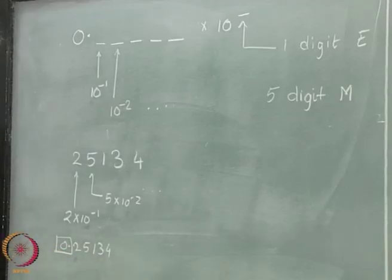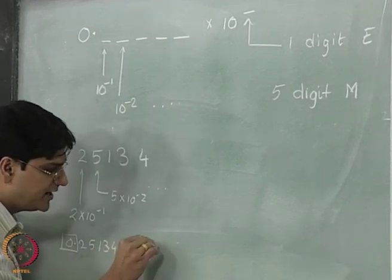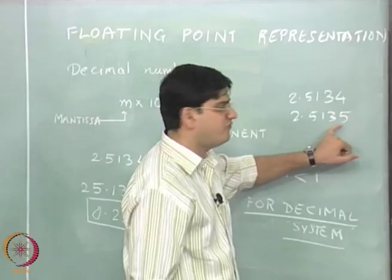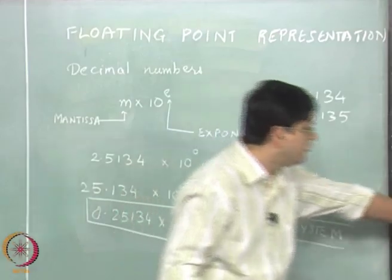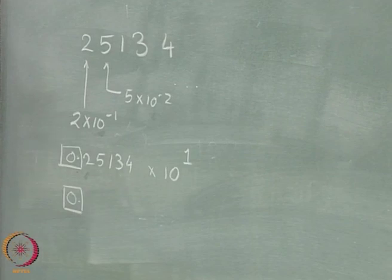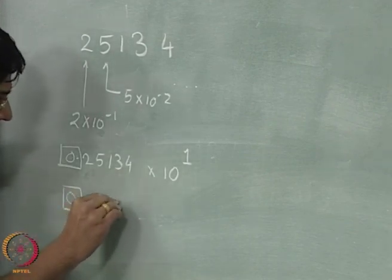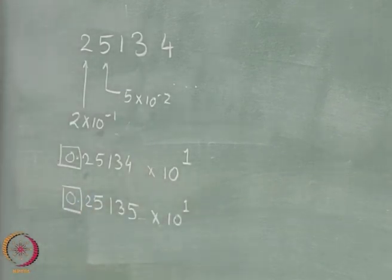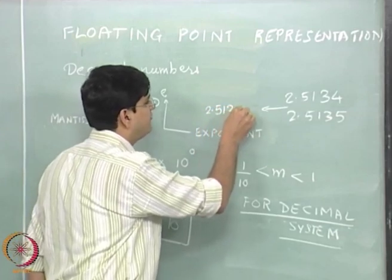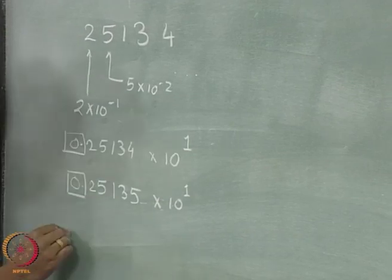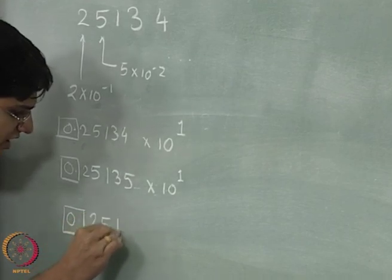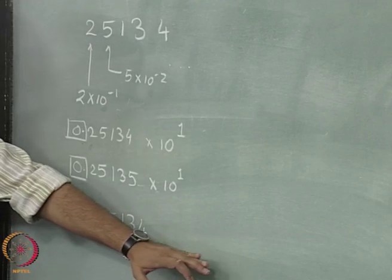The number 2.5134 is represented as 0.25134 multiplied by 10 to the power 1, and the number 2.5135 is represented as 0.25135 multiplied by 10 to the power 1. Now, if we had a number between these two, say 2.51345, and we try to represent it, we get 0.25134 and then we have run out of space. With only 5 spaces for the mantissa, we cannot represent 2.51345.